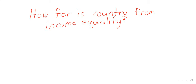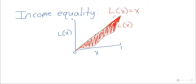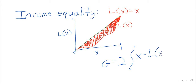The area between these curves is always between 0 and 1/2. Taking twice the area makes it be between 0 and 1, and by convention people decided they preferred that. So in calculus terms, the Gini index is twice the integral from 0 to 1 of (x − L(x)) dx.